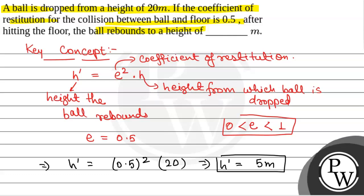So the height to which the ball rebounds is 5 meter. So the correct answer will be 5. Hope you all understood it well. Best of luck.